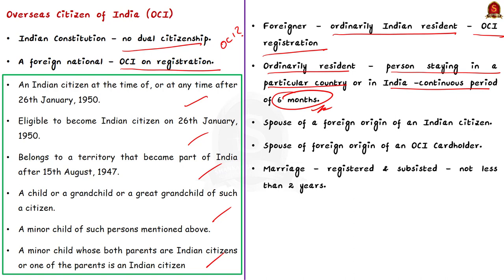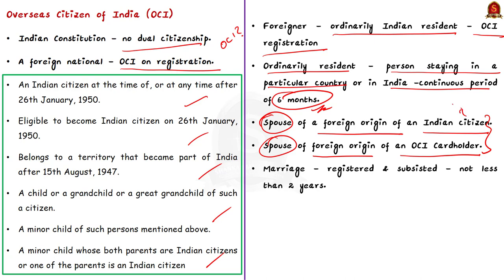Besides the above mentioned, there are some criteria for spouses. Firstly, the spouse of foreign origin of an Indian citizen can apply for an OCI card. Secondly, the spouse of foreign origin of an OCI card holder can also apply for Overseas Citizenship of India. The condition is that their marriage should have been registered and subsisted for a continuous period of not less than two years, immediately preceding the presentation of the application.